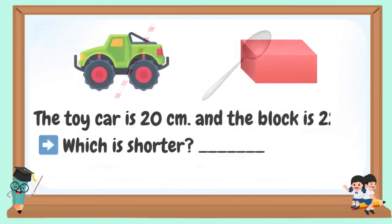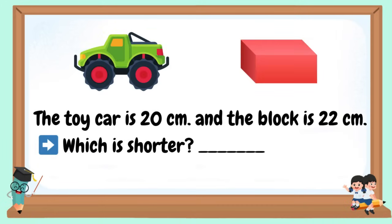The toy car is 20 cm and the block is 22 cm. Which is shorter?